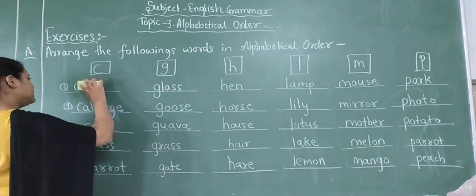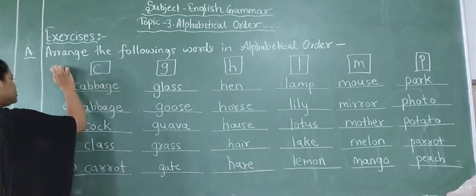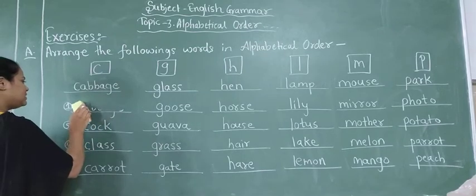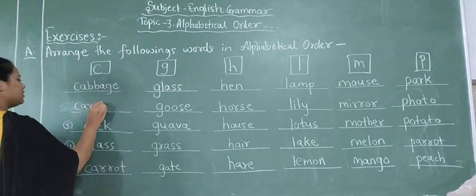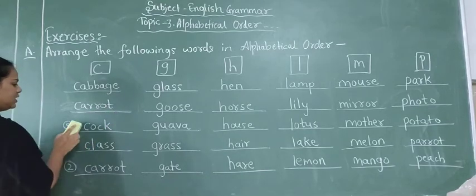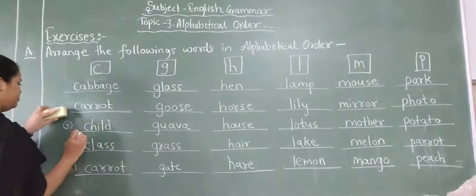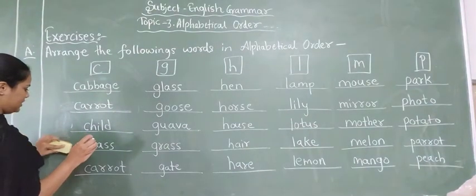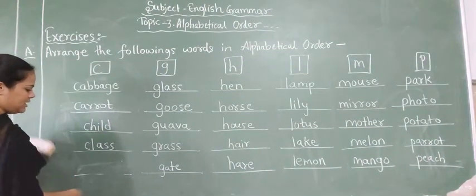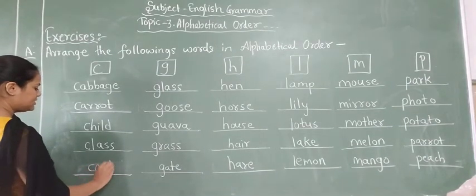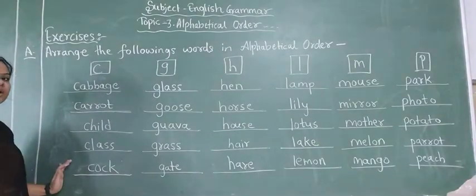First, my lobe, we will write C-A-B-B-A-G-E cabbage first. Second, we will write C-A-R-R-O-T carrot. Then third, we will write C-H-I-L-D child. Then in number four, we have to write class. And the last, we will write C-O-C-K cock. So in this way, we have arranged the alphabetical order of the C letter.